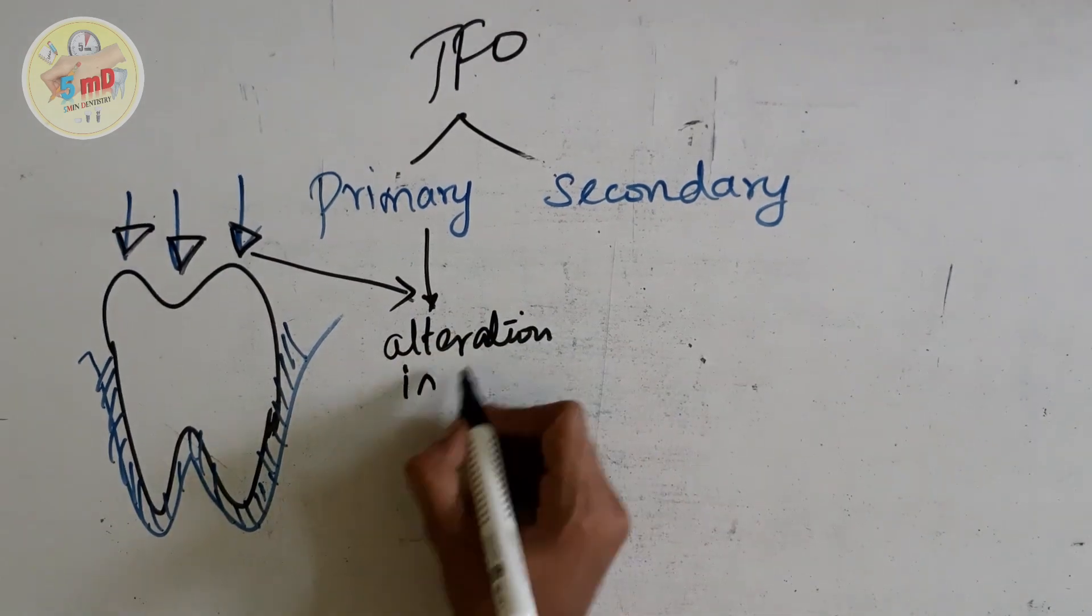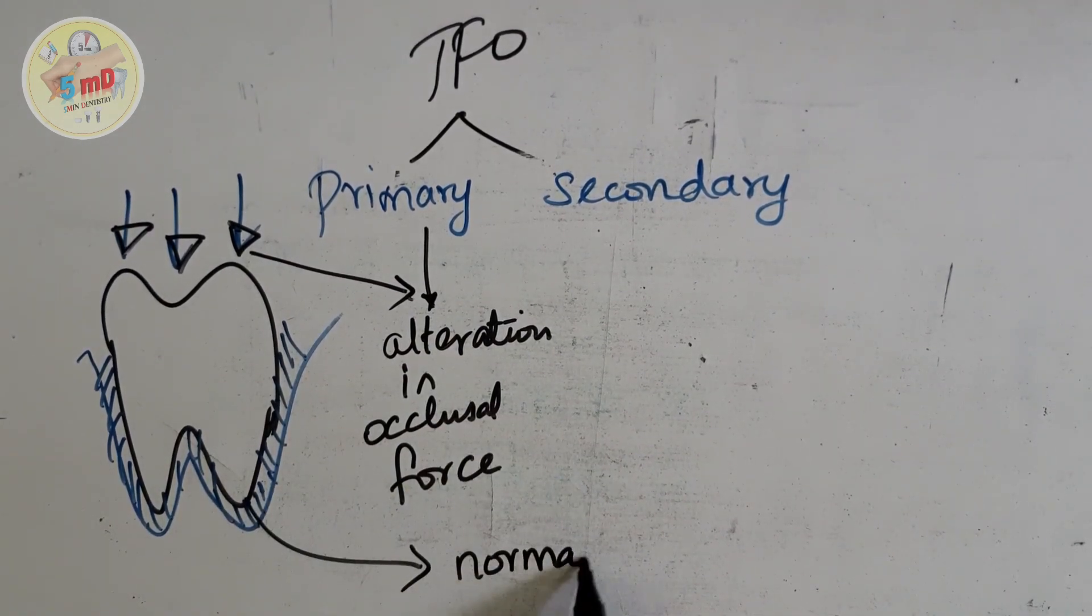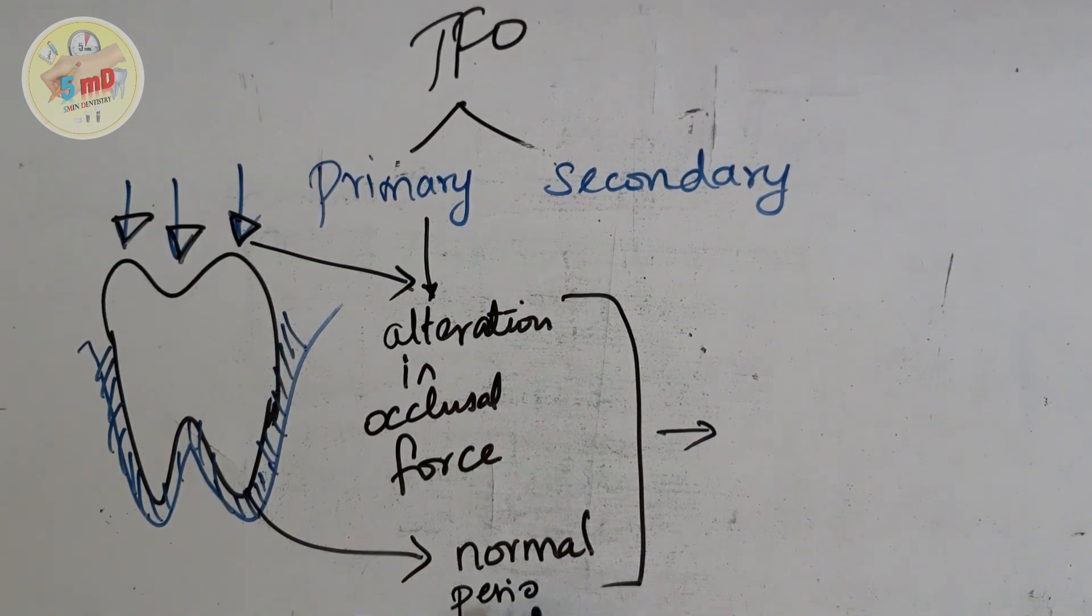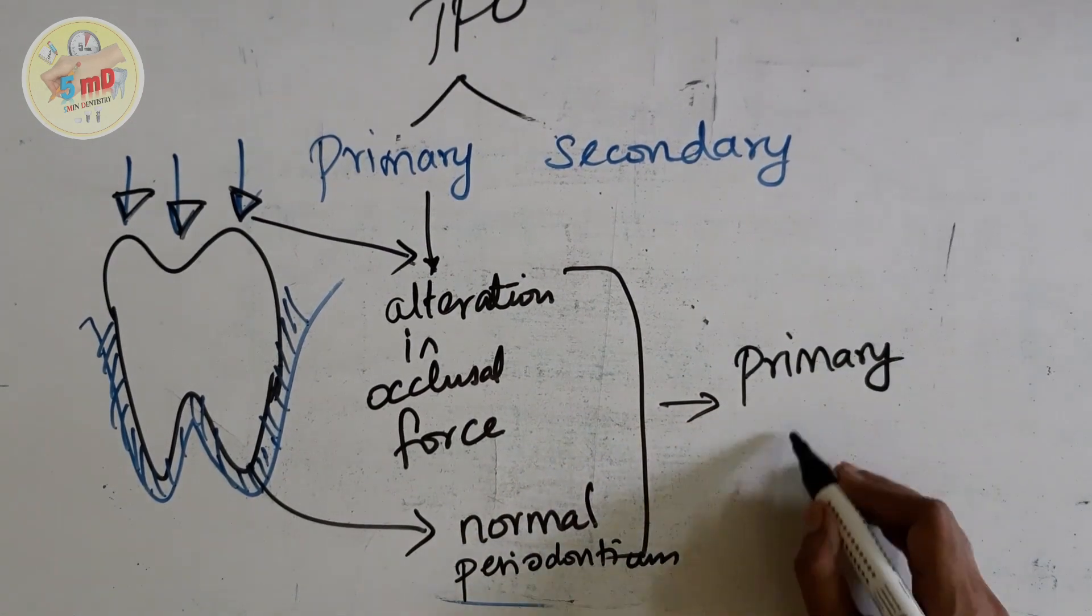In primary TFO, there is alteration in the occlusal forces—that is, the periodontium is almost normal—whereas in secondary, just the opposite occurs.